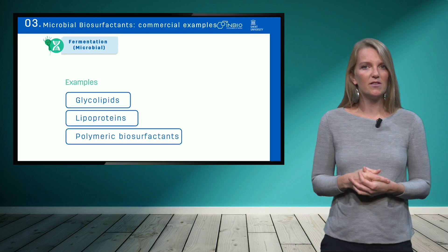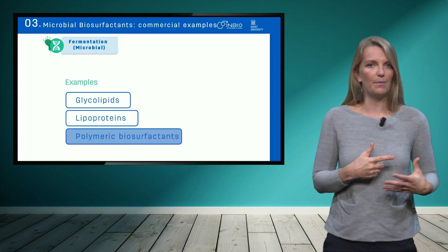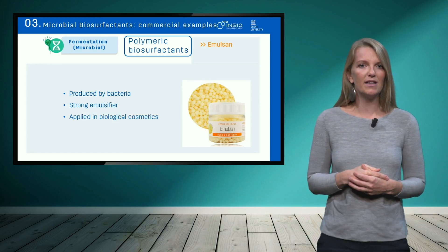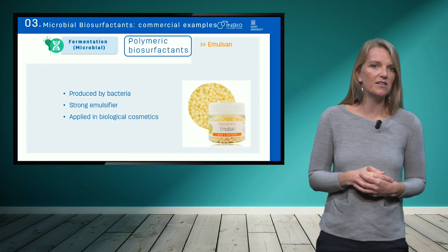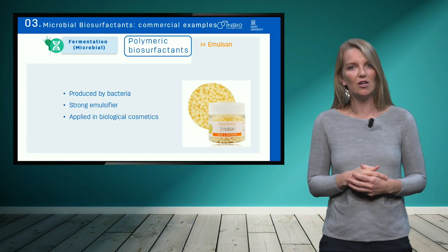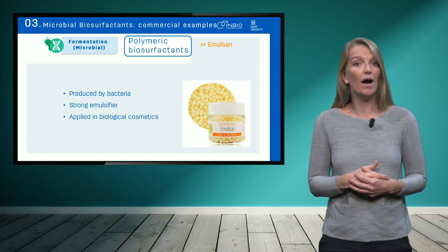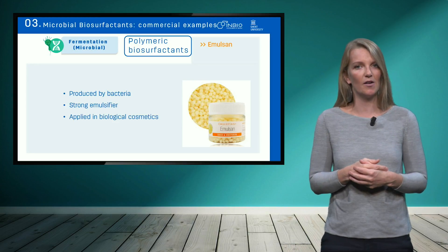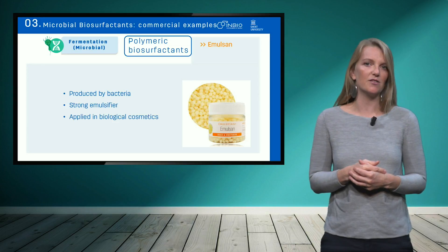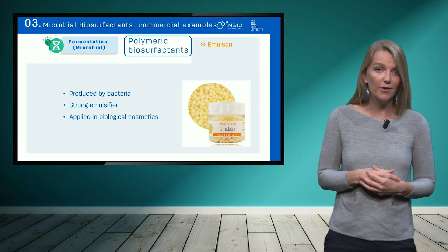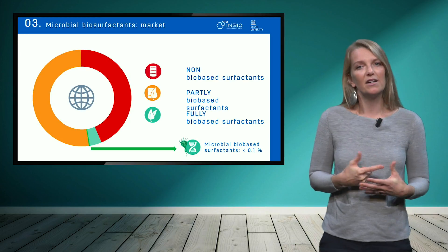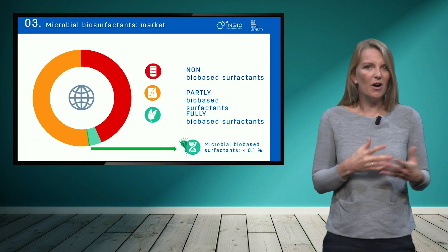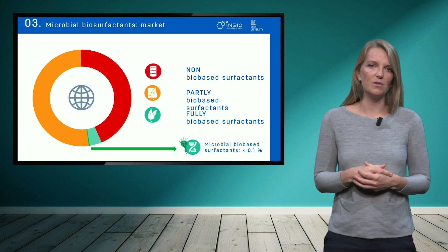A last group of microbial biosurfactants are so-called polymeric biosurfactants. Emulsan is one example, and these biosurfactants are mainly produced on a very small scale for DIY purposes — for example, if you want to generate your own cosmetic, you can buy this natural polymeric biosurfactant as a natural emulsifier. Although several examples of microbial biosurfactants have been commercialized, their market volumes remain small, as we saw before.